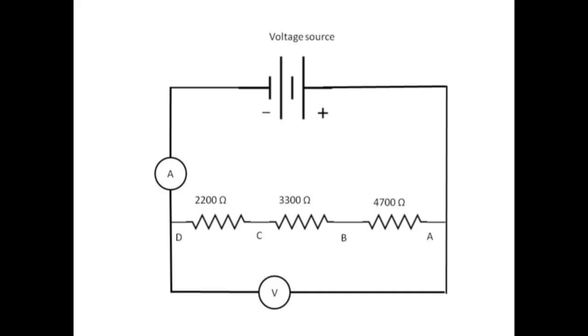A circuit diagram of the series resistors shows that the current is read by an ammeter placed in series between the resistors and the voltage source.